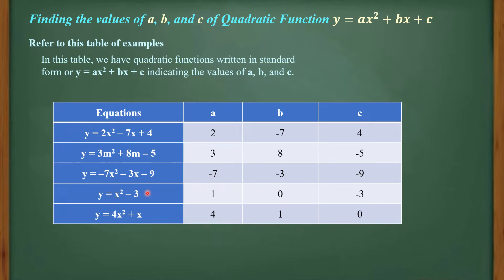For y = 4x² + x: notice there is no constant term, so C = 0. There is an x² term with coefficient 4, and an x term with coefficient 1. When there is no standalone constant number, C = 0. These are the values of A, B, and C using the quadratic function y = Ax² + Bx + C.